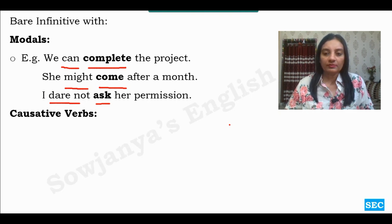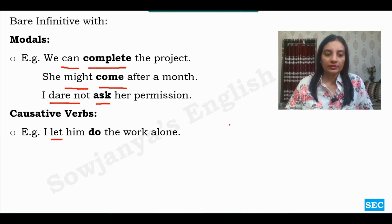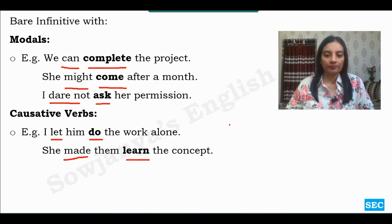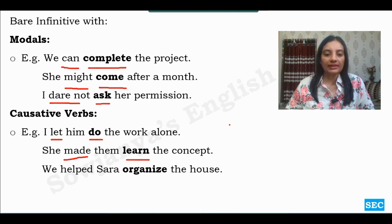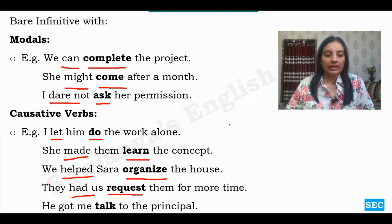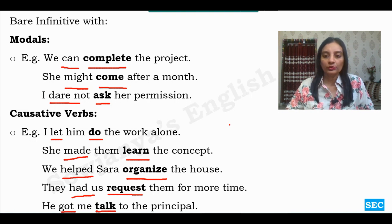Bare infinitive with causative verbs. 'I let him do the work alone' — not 'to do', simply 'do', simple V1. 'She made them learn the concept' — 'made' is the causative verb and 'learn' is bare infinitive without 'to'. 'We helped Sarah organize the house' — 'help' is the causative verb and 'organize' is bare infinitive. 'He had them request more time' — 'had' is causative and 'request' is V1. 'He got me talk to the principal' — 'got' is the causative verb and 'talk' is bare infinitive.